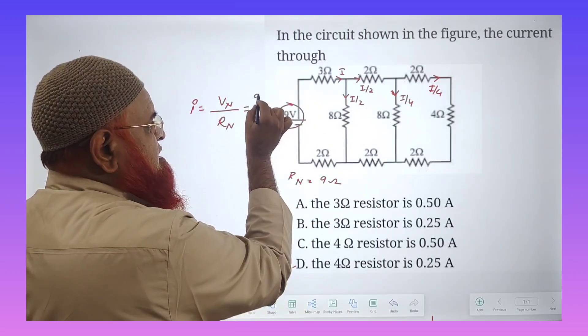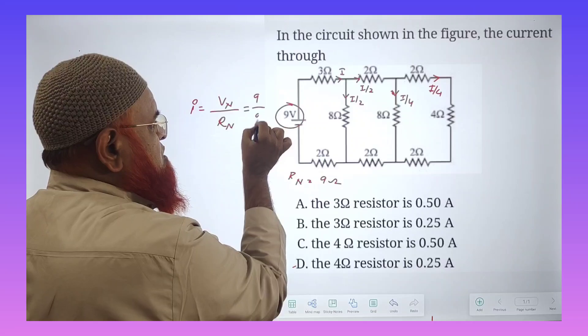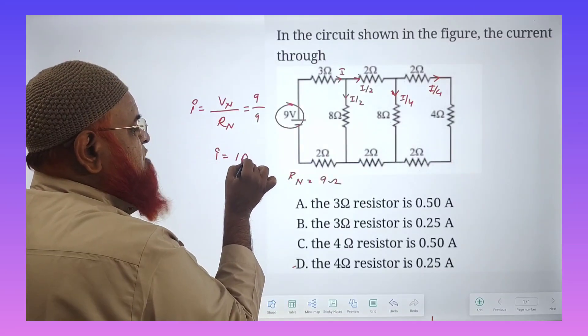So therefore V net is 9 and total resistance also 9. So current is nothing but 1 ampere.